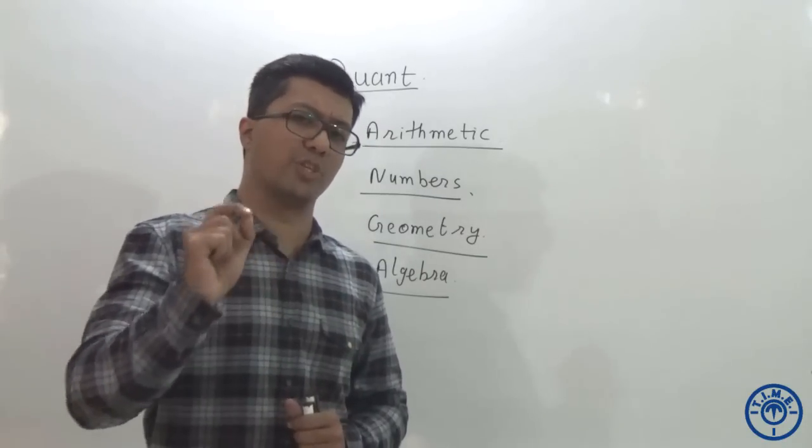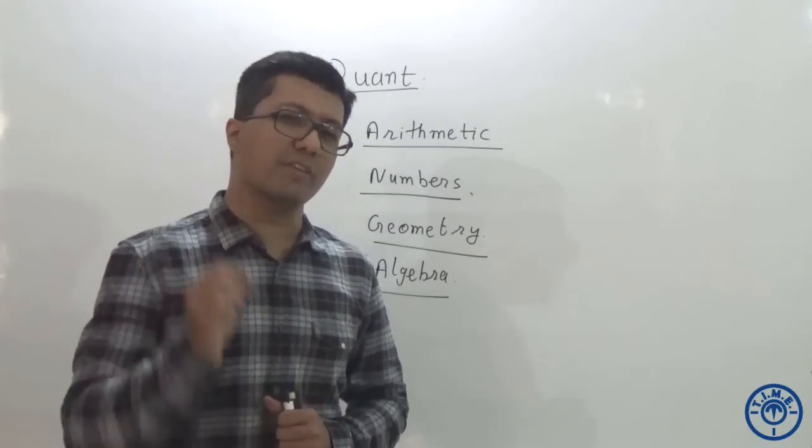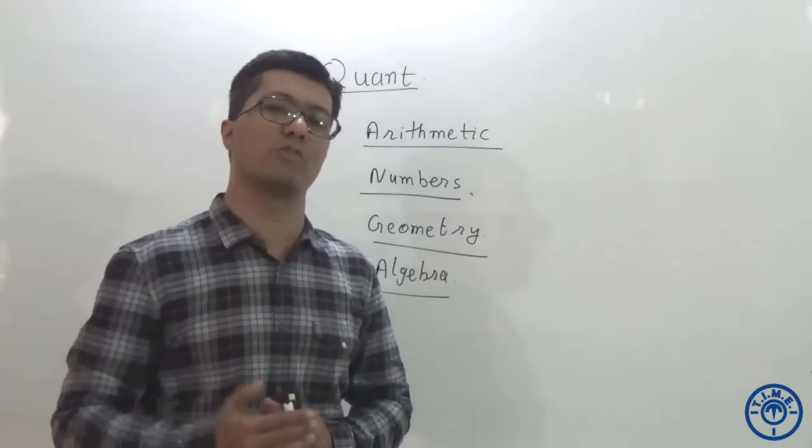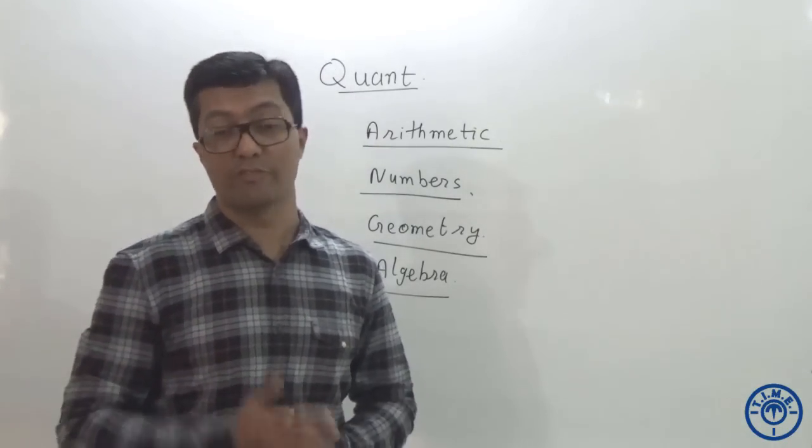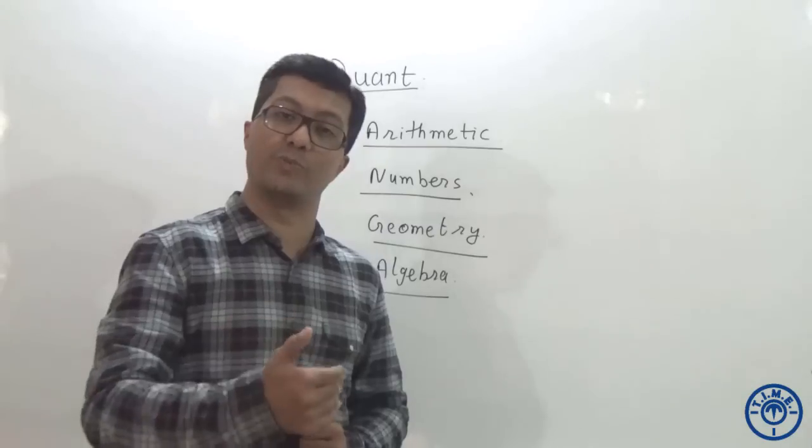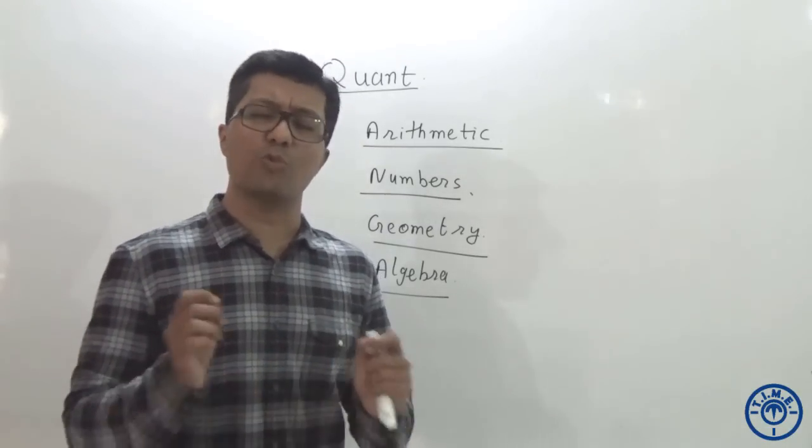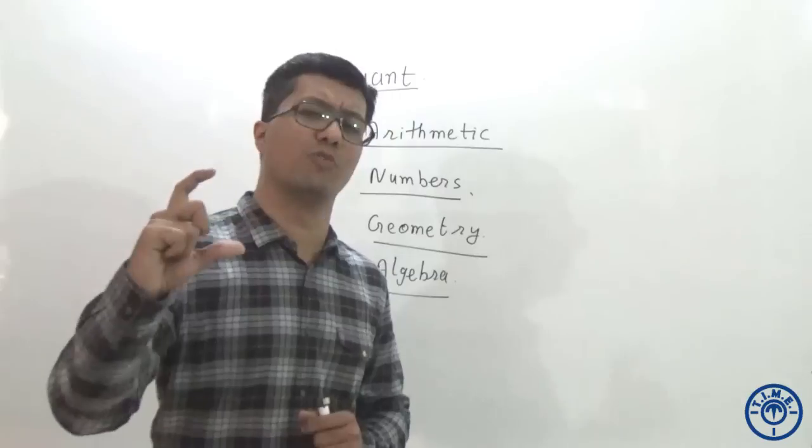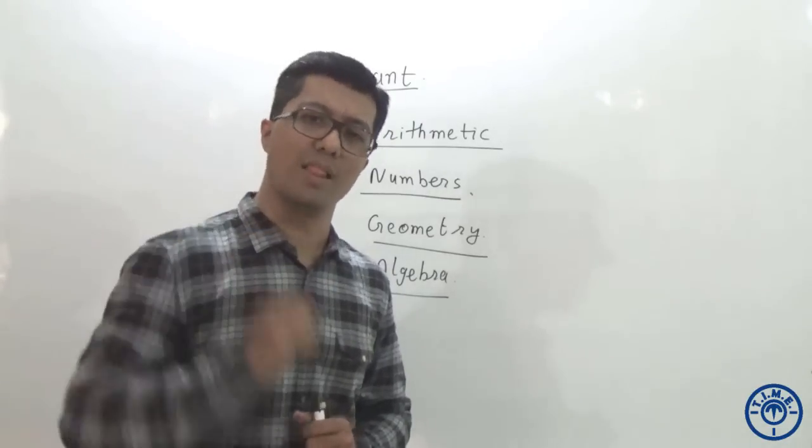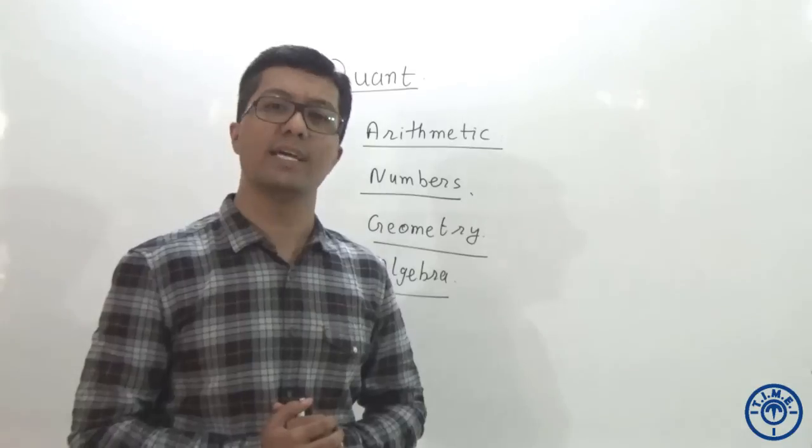When you are looking at the quantitative aptitude paper, it is very difficult to read all the 34 questions in one round because we don't know from which section which question has been kept. So what are we supposed to be doing in that one hour? How to utilize that one hour to the maximum level? Let us try to understand that.